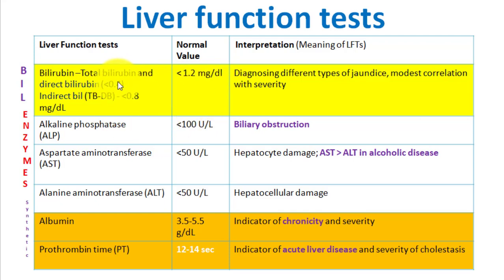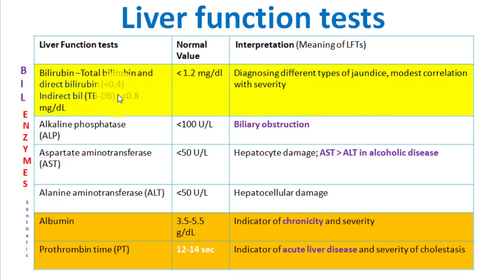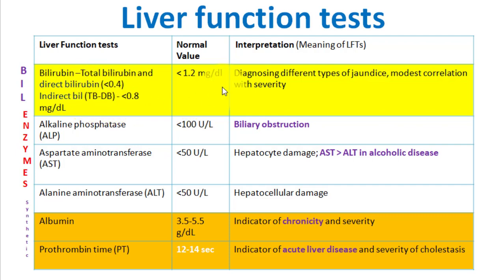Bilirubin test is the most important liver function test because it can differentiate all three types of jaundice. In pre-hepatic or hemolytic jaundice, indirect bilirubin will be very high. In hepatic jaundice, both direct and indirect will increase. In post-hepatic jaundice, direct bilirubin will be very high.